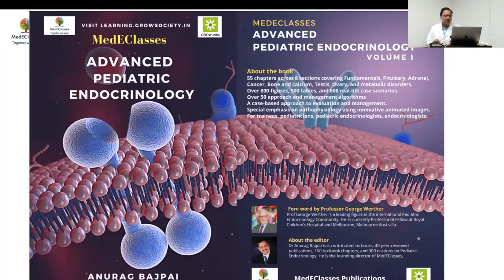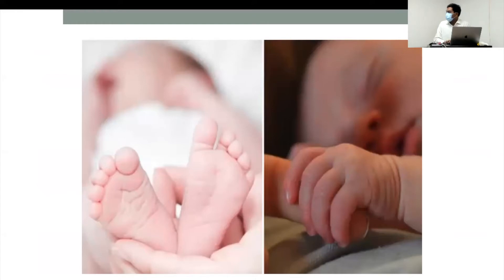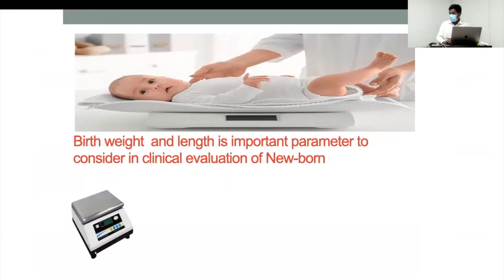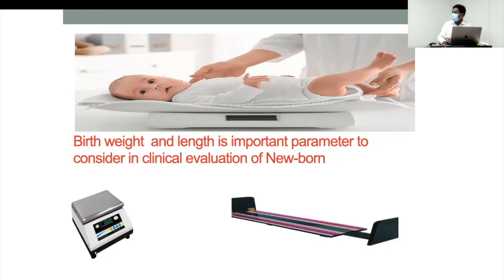Birth weight and length are important parameters in the clinical evaluation of a newborn, as they indicate how the fetus was growing in utero. For accuracy, length should be measured using an infantometer, and both weight and length measurements should be precise, ideally taken after 12 hours of birth.